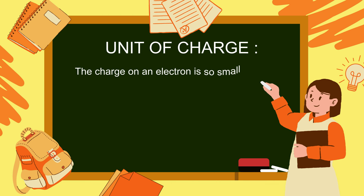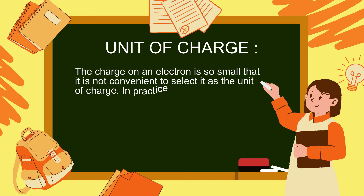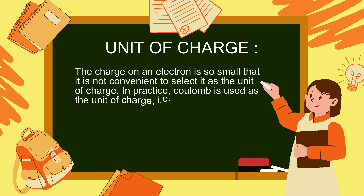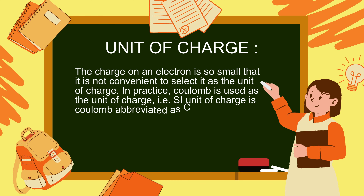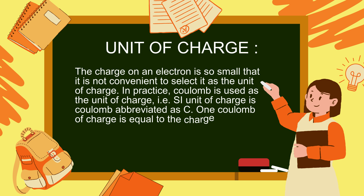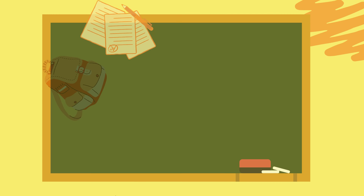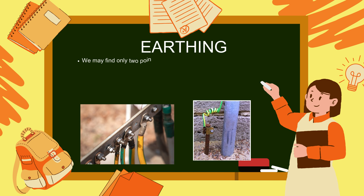Unit of charge: the charge on an electron is so small that it is not convenient to select it as the unit of charge. In practice, the coulomb is used as the unit of charge, abbreviated as C. One coulomb of charge is equal to the charge on 6.25 × 10¹⁶ electrons.